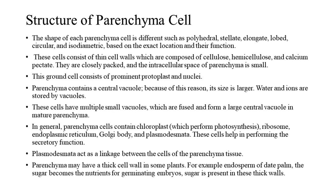These cells consist of thin cell walls, which are composed of cellulose, hemicellulose, and calcium pectate. They are closely packed, and the intercellular space of parenchyma is small. This ground cell consists of a prominent protoplast and nuclei. Parenchyma contains a central vacuole, which is why its size is larger.